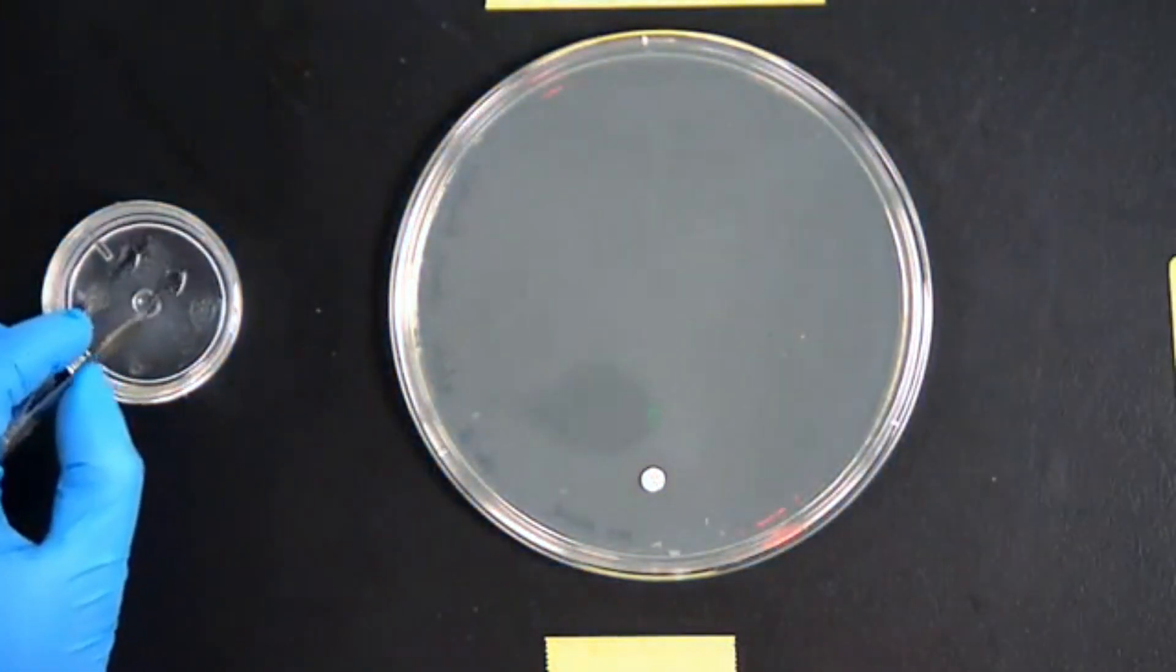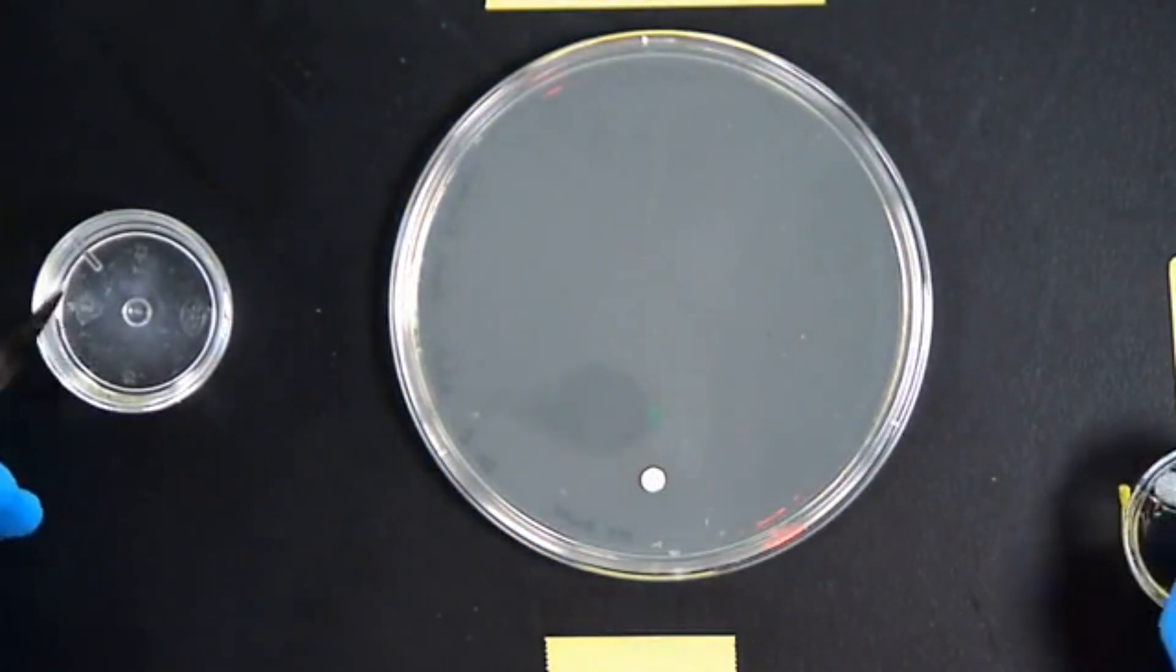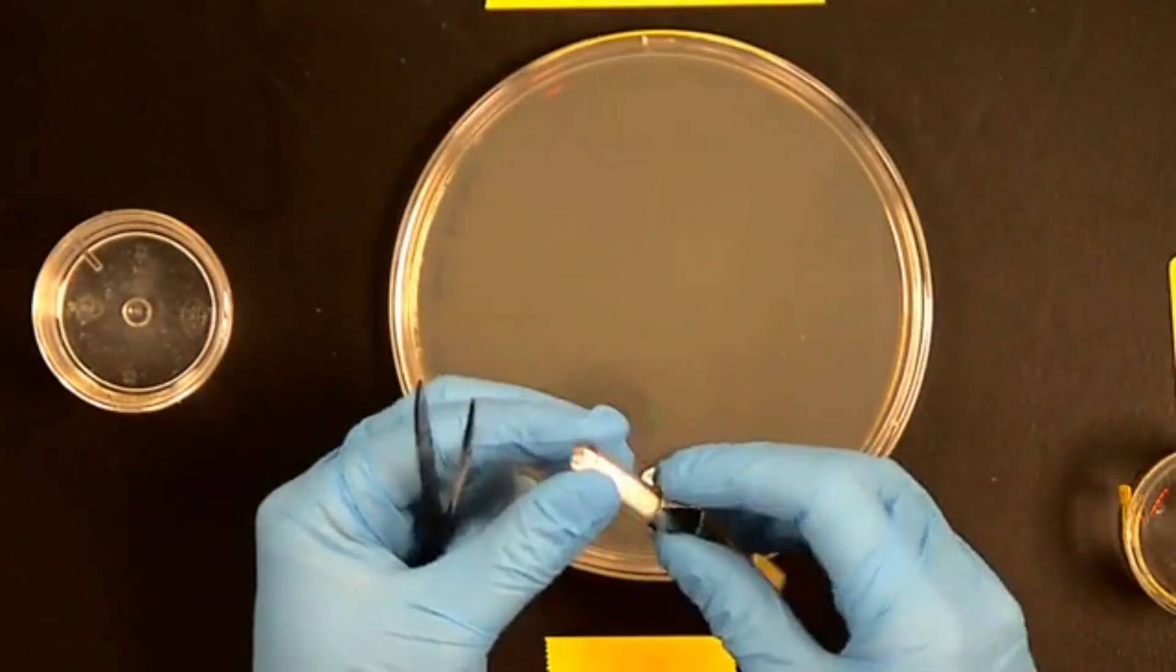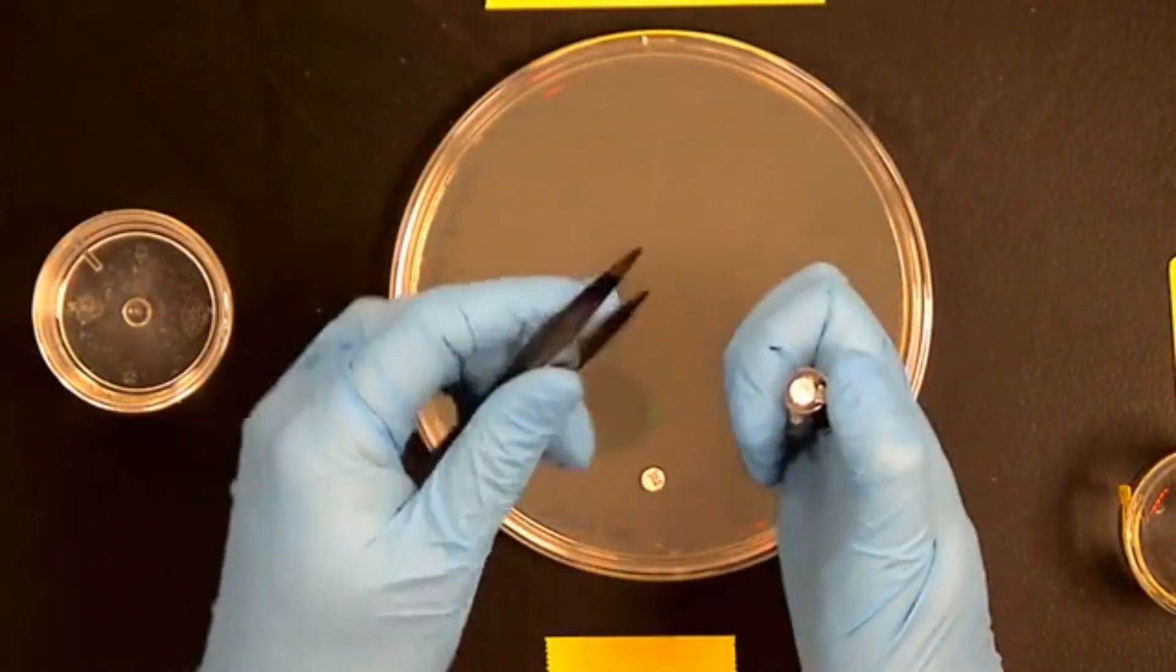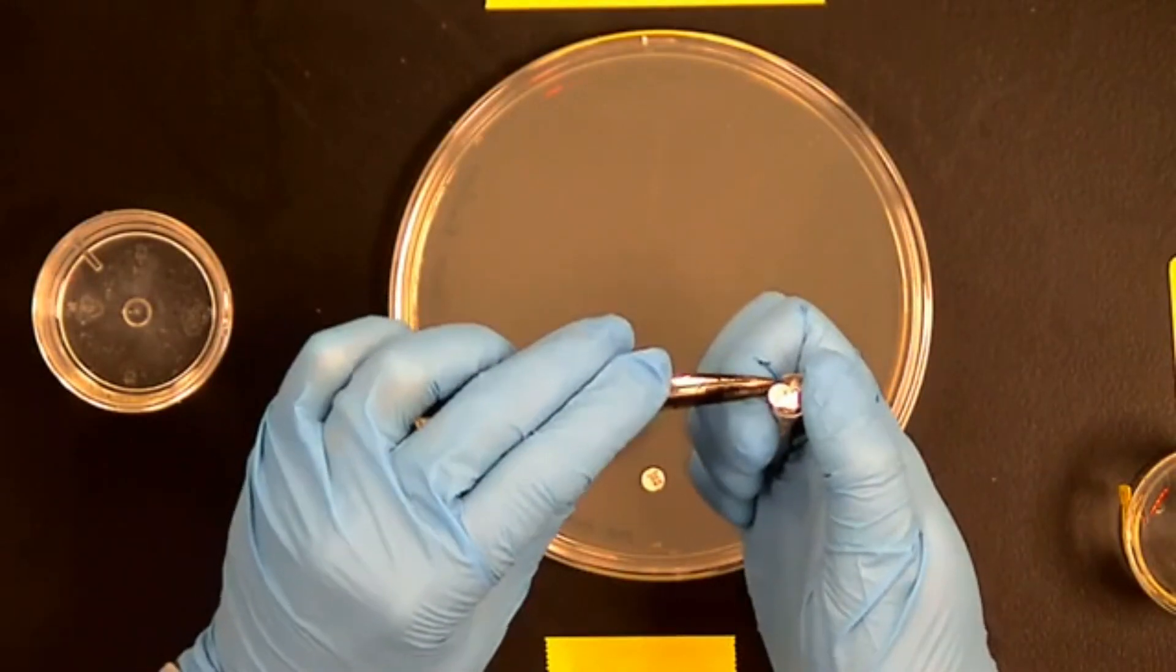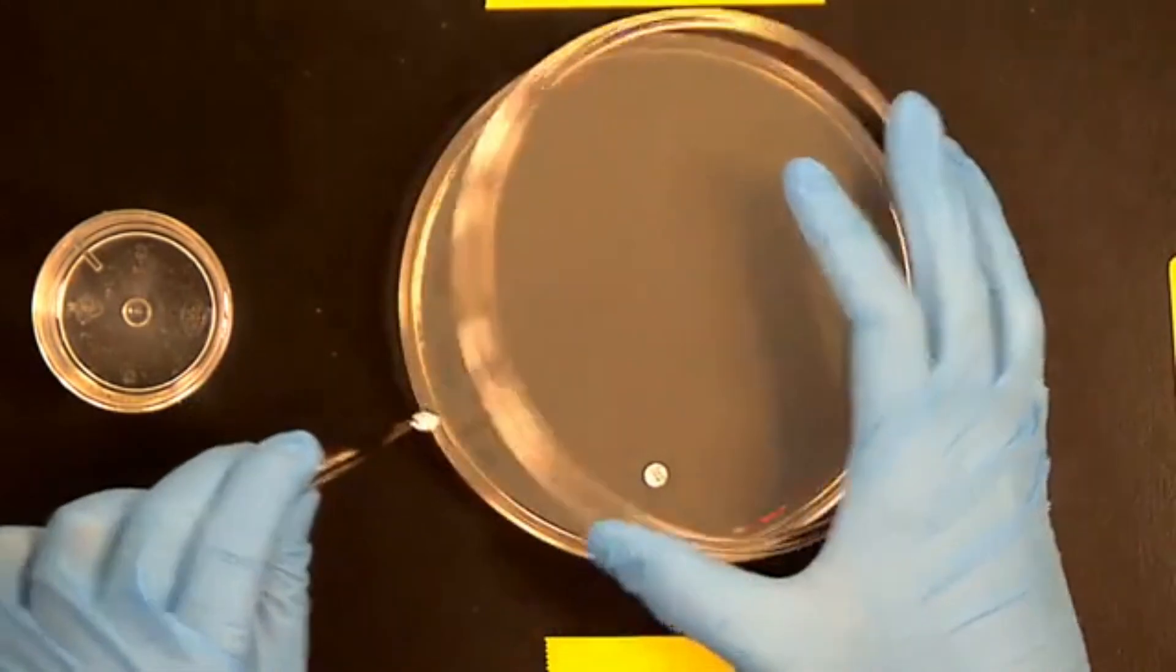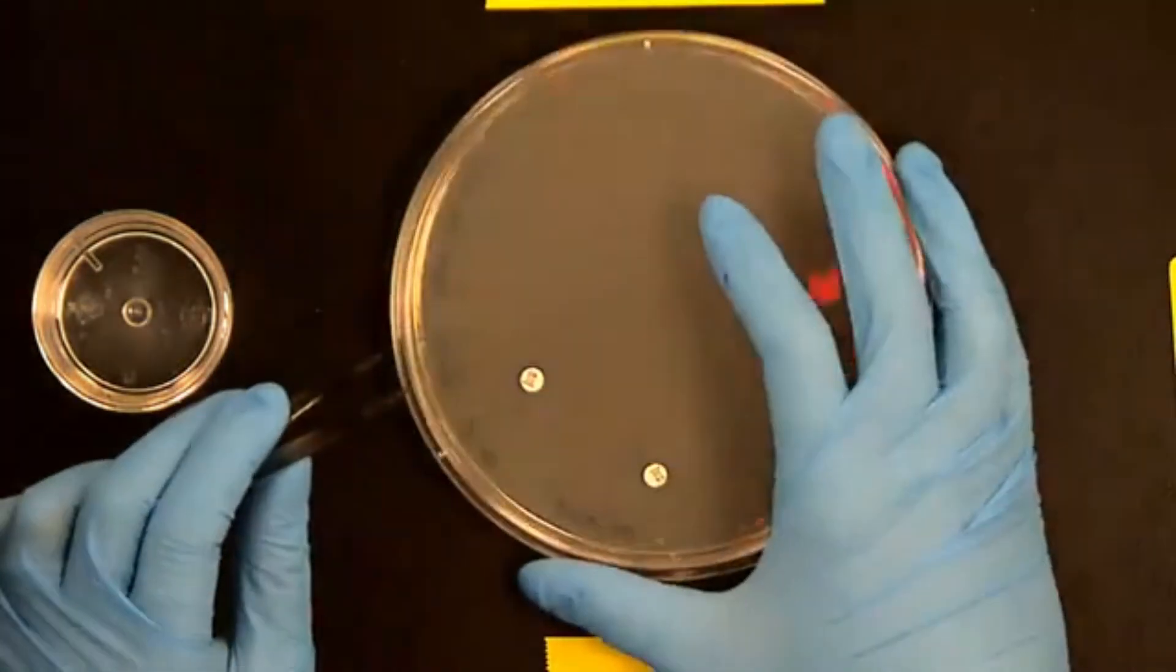Then you're going to disinfect the forceps again, and you'll repeat this and grab each of the antibiotic discs that you need to place onto the plate. So each time, just make sure you're leaving enough space so that you have adequate room for the bacteria to grow near each disc.